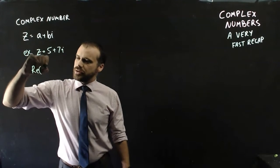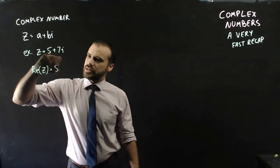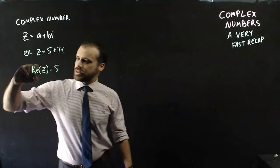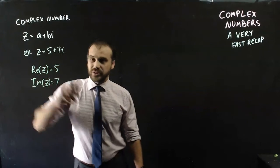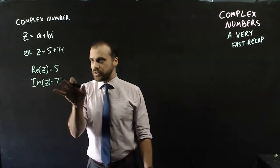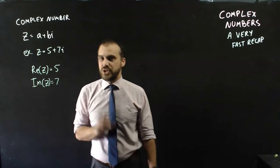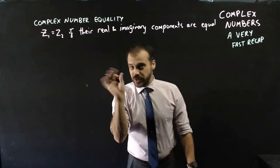We can say that the real component of z is equal to 5, and we can say that the imaginary component of z is equal to 7. Not 7i. The imaginary component is just the coefficient of i. So this is a really simple idea.